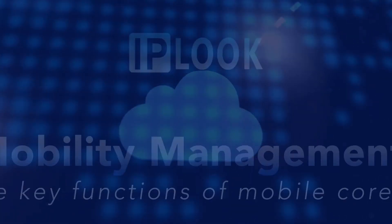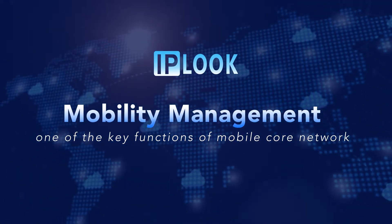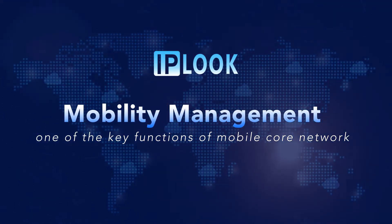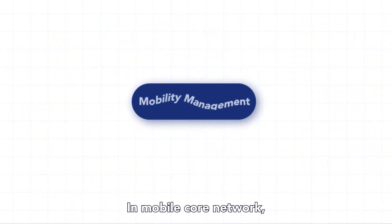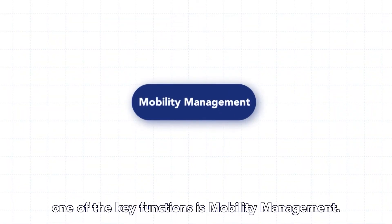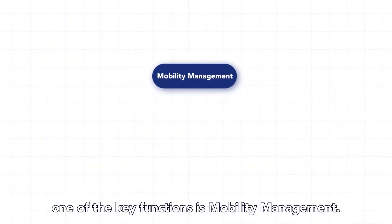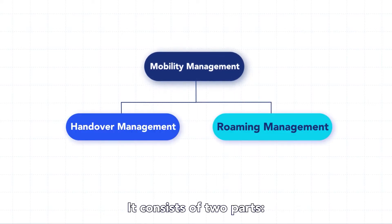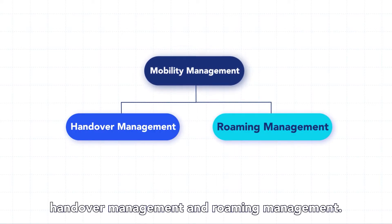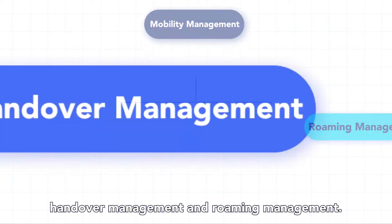Hello, this is IPLOOK. Today we are talking about Mobility Management. In mobile core networks, one of the key functions is Mobility Management. It consists of two parts: handover management and roaming management.